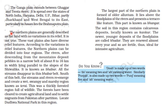The northern plains are generally described as flat land with no variation in relief, but that is not entirely correct — these vast plains also have diverse relief features. According to variations in relief features, the northern plains can be divided into four regions.